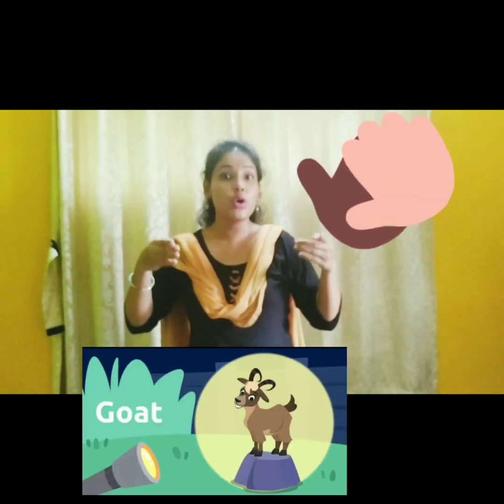Now tell me what kind of animal is this. This is a goat. What is the use of a goat? Goat gives us milk, it also gives us fur, and it also gives us meat. We eat mutton, which comes from the goat. So goat is used for fur and as meat.